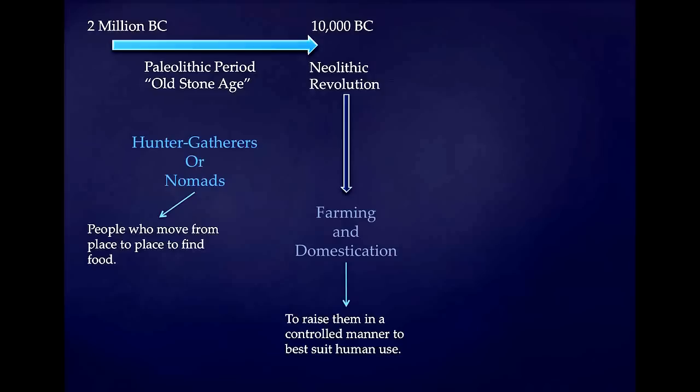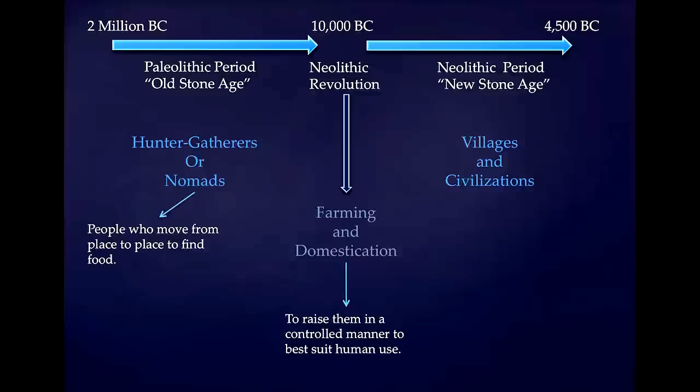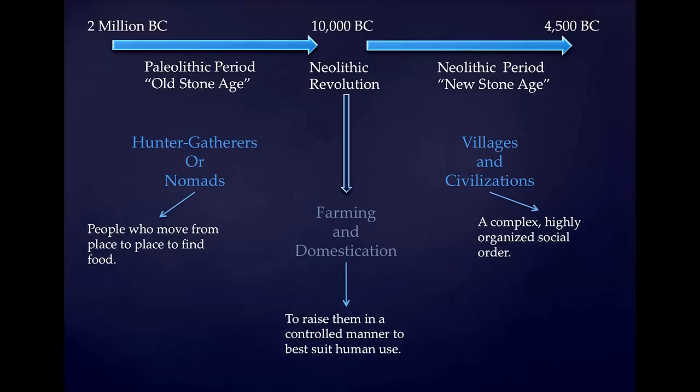The Neolithic Revolution gives way to the Neolithic Period, also known as the New Stone Age, which roughly lasts until about 4,500 B.C. People are no longer hunter-gatherers or nomads. They begin establishing permanent villages and civilizations, setting up permanent farms and raising animals without constantly moving around. A civilization is a complex, highly organized social order — think how we live presently, with millions of people, very complex but also highly organized.